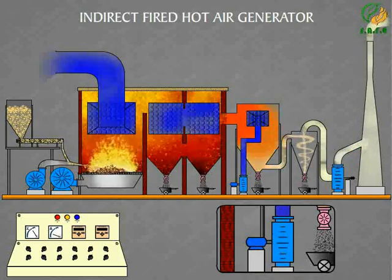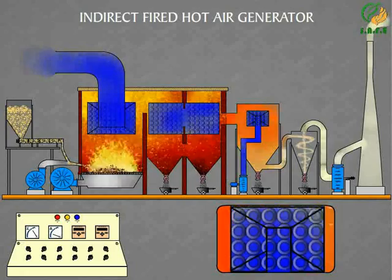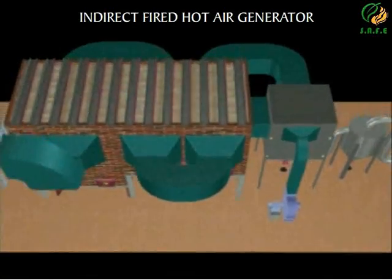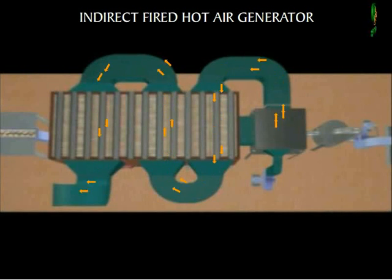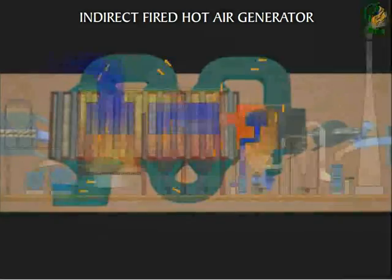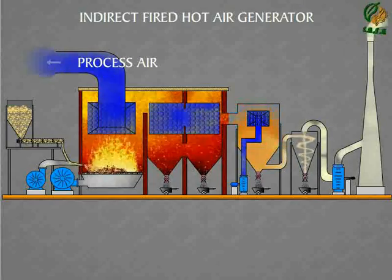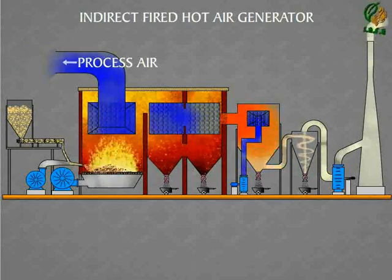Fresh air is sucked from outside into a pipe situated in the pre-heated chamber. From here the air passes through the third pass, then from the third pass to the second pass, and from the second pass to the first pass, where it is released as process air. In this way, the hot air and fresh air are circulated counterclockwise, and the efficiency of heating is increased substantially.